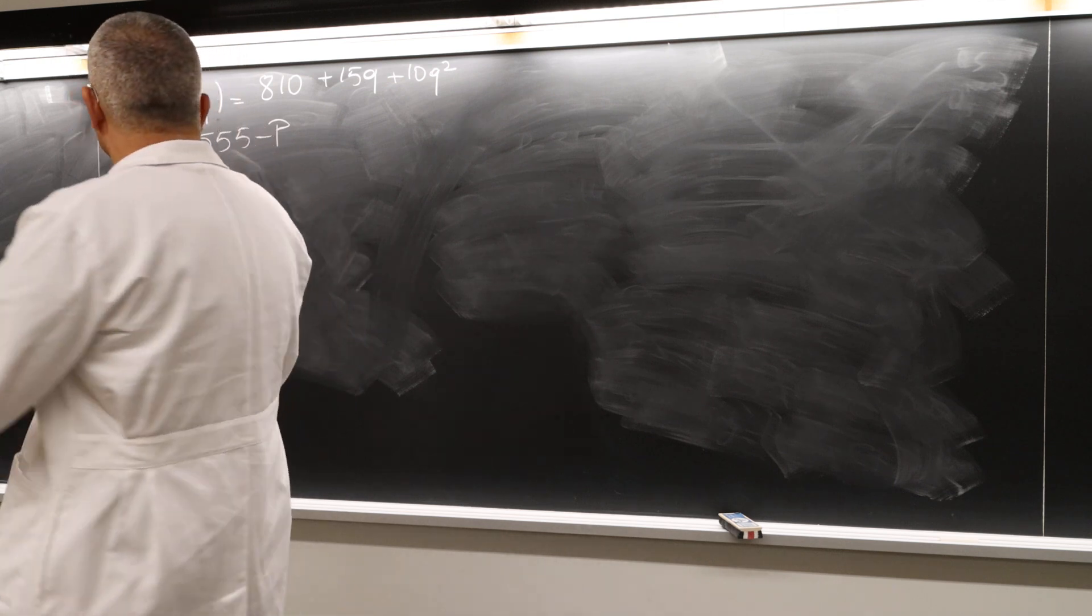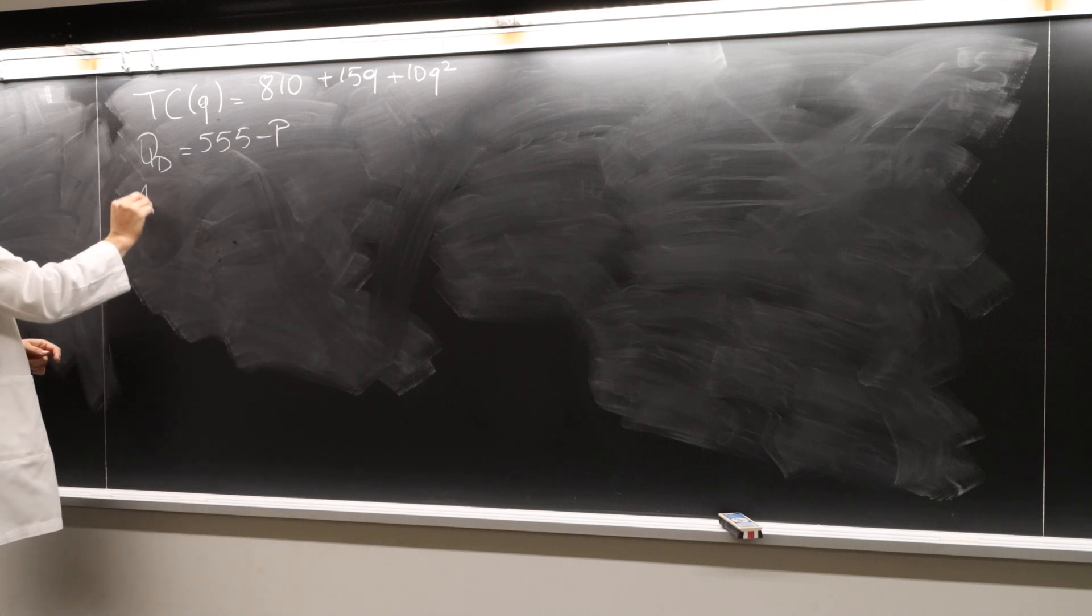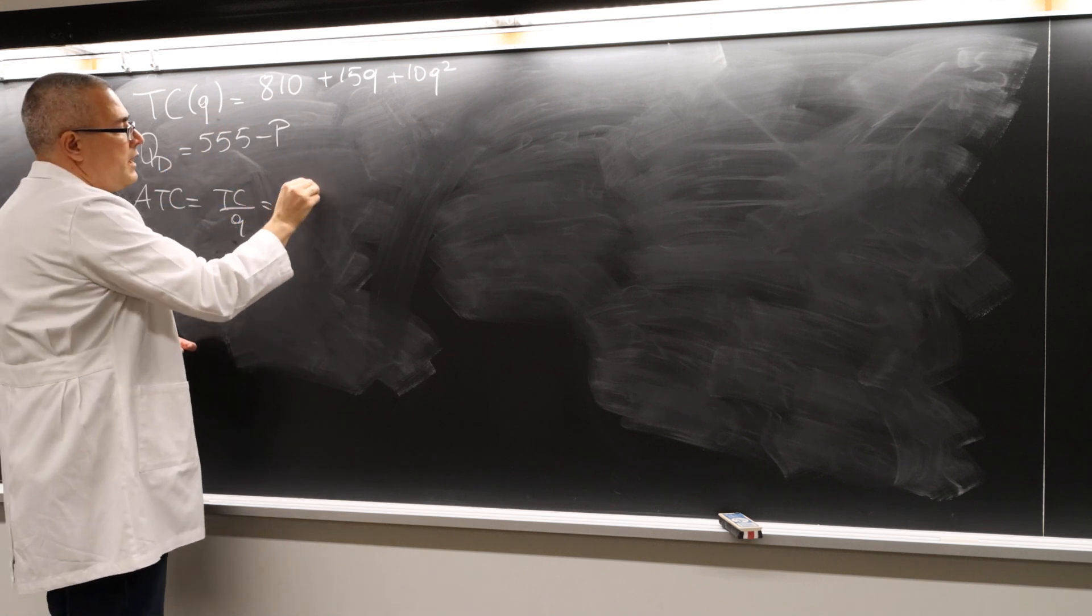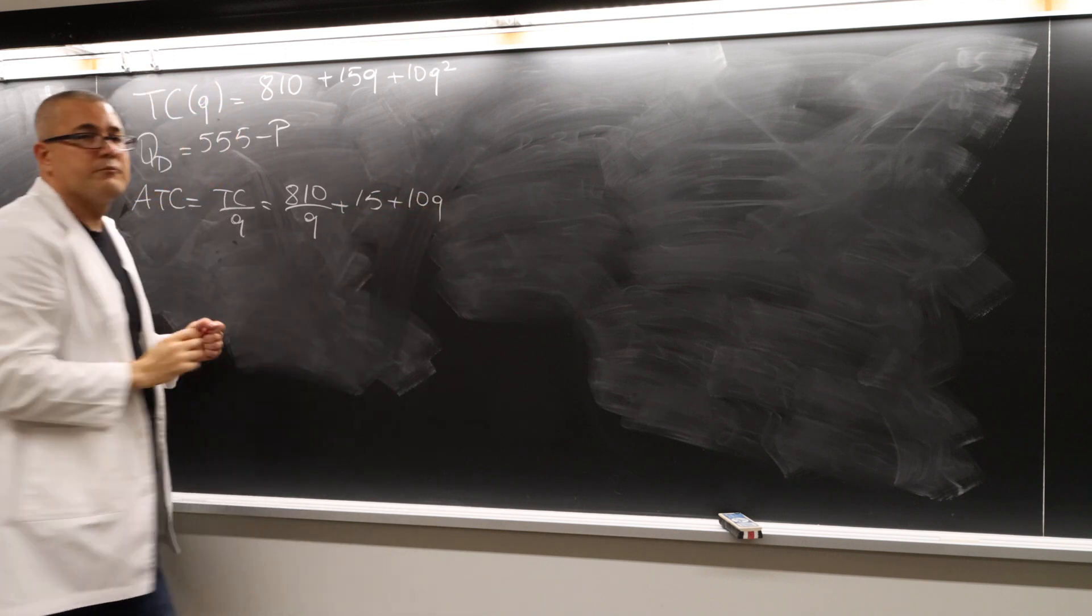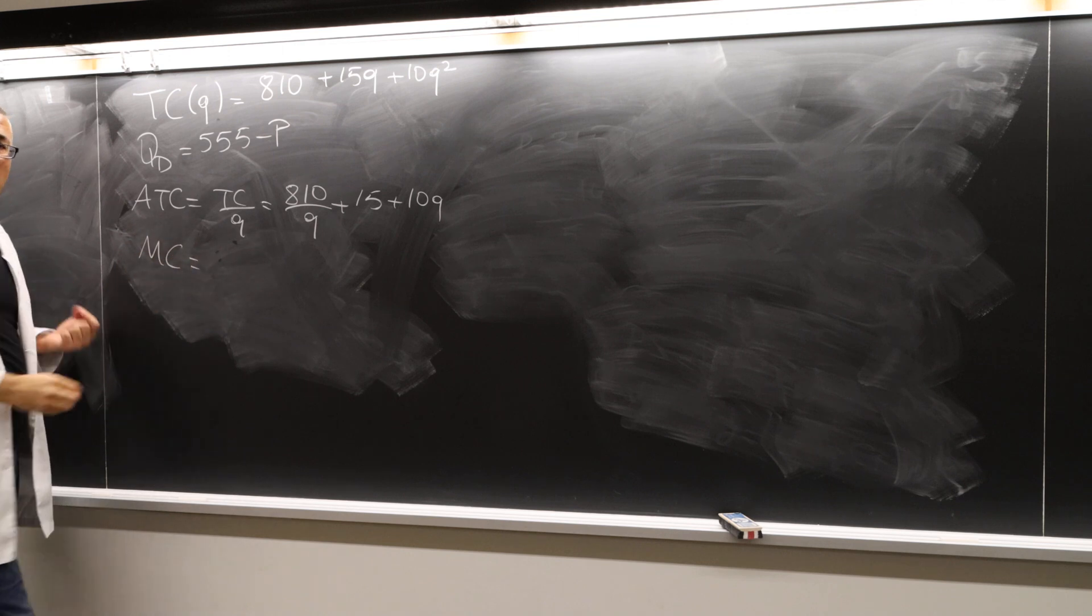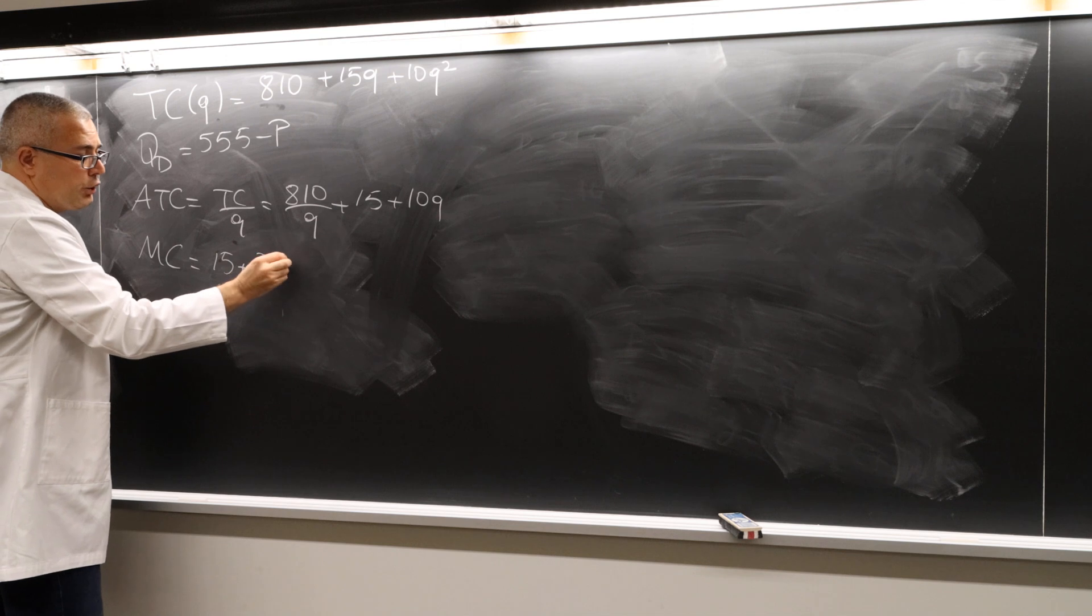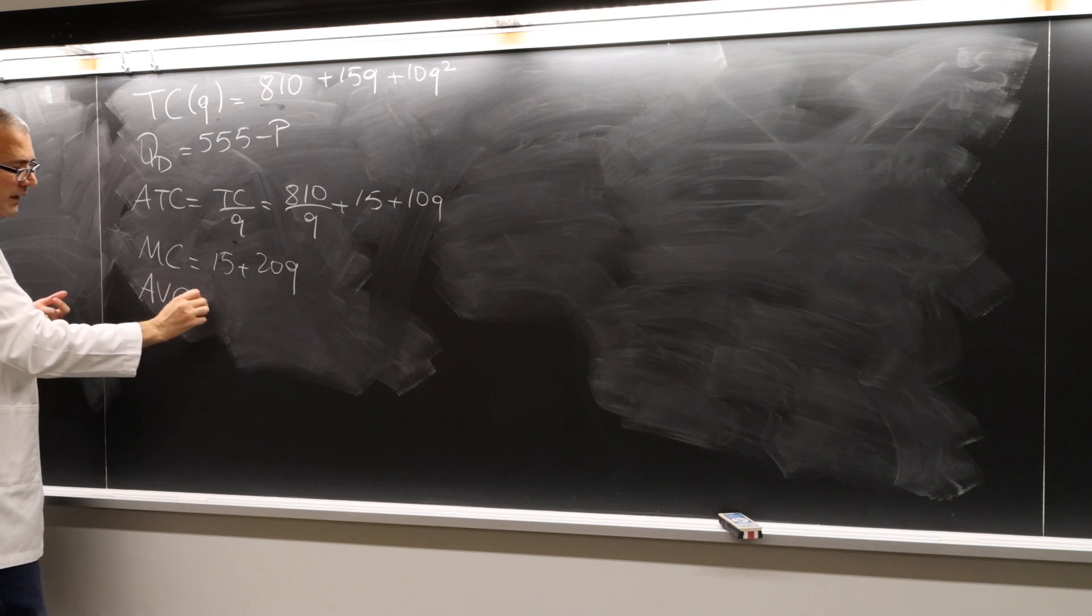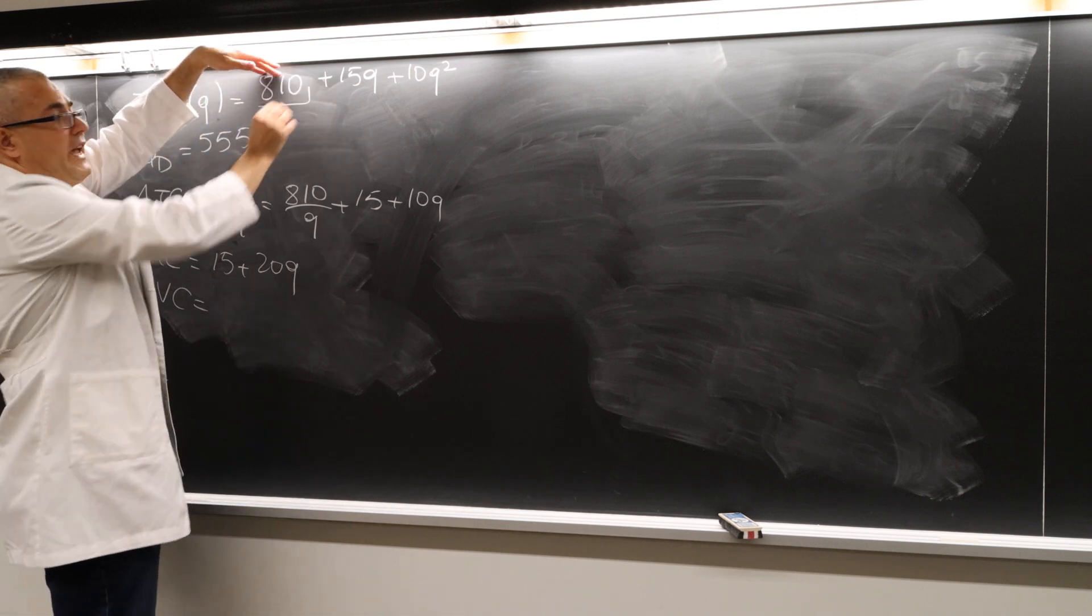How do we do that? Well, let me start with the easy ones. So I'll push the hard ones to you. The average total cost is defined by total cost divided by q. So it's 810 divided by q plus 15 plus 10q. That's different than marginal cost though, because in the marginal cost we take the derivative with respect to q. So it's 810 will vanish, 15 plus 20q. And then what about average variable cost? The fixed cost is 810.